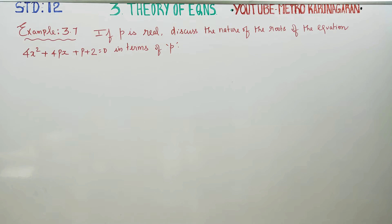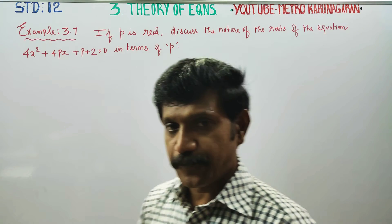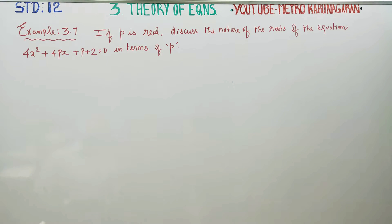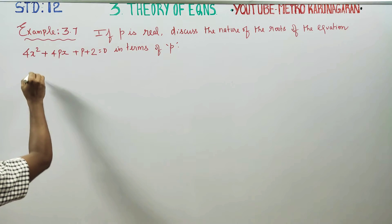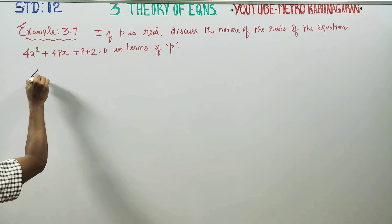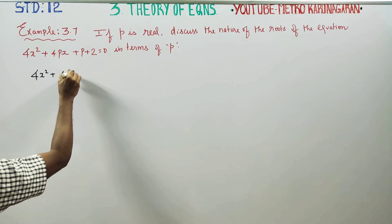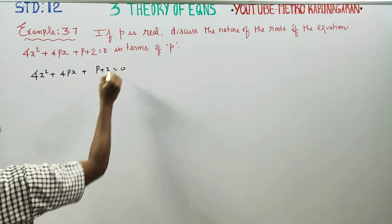Dear students, in theory of equations, example 3.7: if p is real, discuss the nature of the roots of the quadratic equation 4x squared plus 4px plus p plus 2 equal to 0.